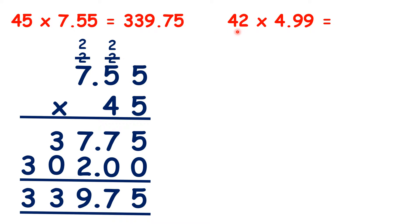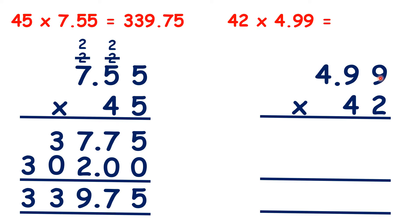So now pause the video and see if you can work out 42 times 4.99. So we can set out our multiplication like this. Rather than putting our largest number at the top, what we can do when we multiply decimals is put the number with the most digits at the top instead. So because we have two decimal places in our question, there will be two decimal places in the answer. So we can write decimal points in our answer lines, underneath the decimal points that we have in the question.